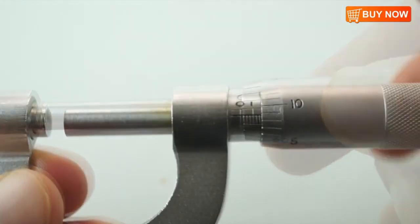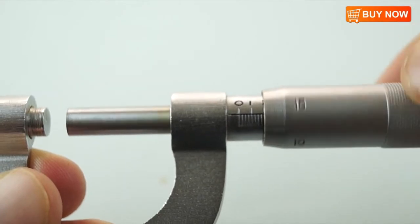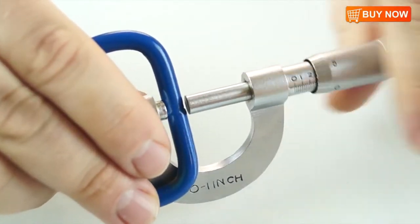Then open the jaw of the scale using the thimble, place the object between the spindles and tighten until the object is securely in position.